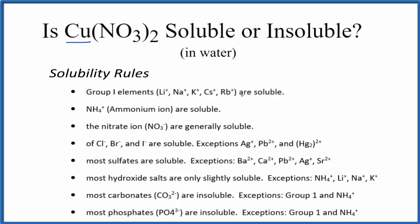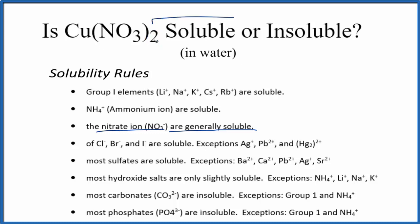If we look at our solubility rules, the third rule down here is that compounds that have the nitrate ion are generally soluble. And here we have copper with two of these nitrate ions. So we would expect, based on this solubility rule, that copper-2 nitrate would be soluble in water.